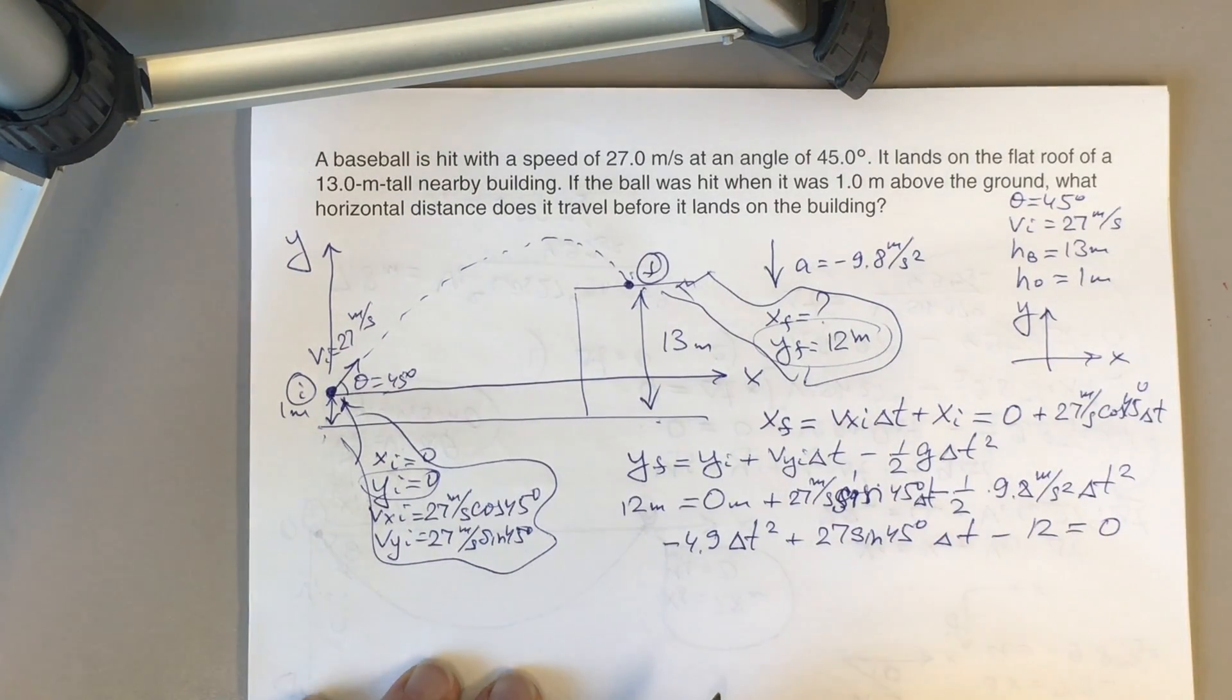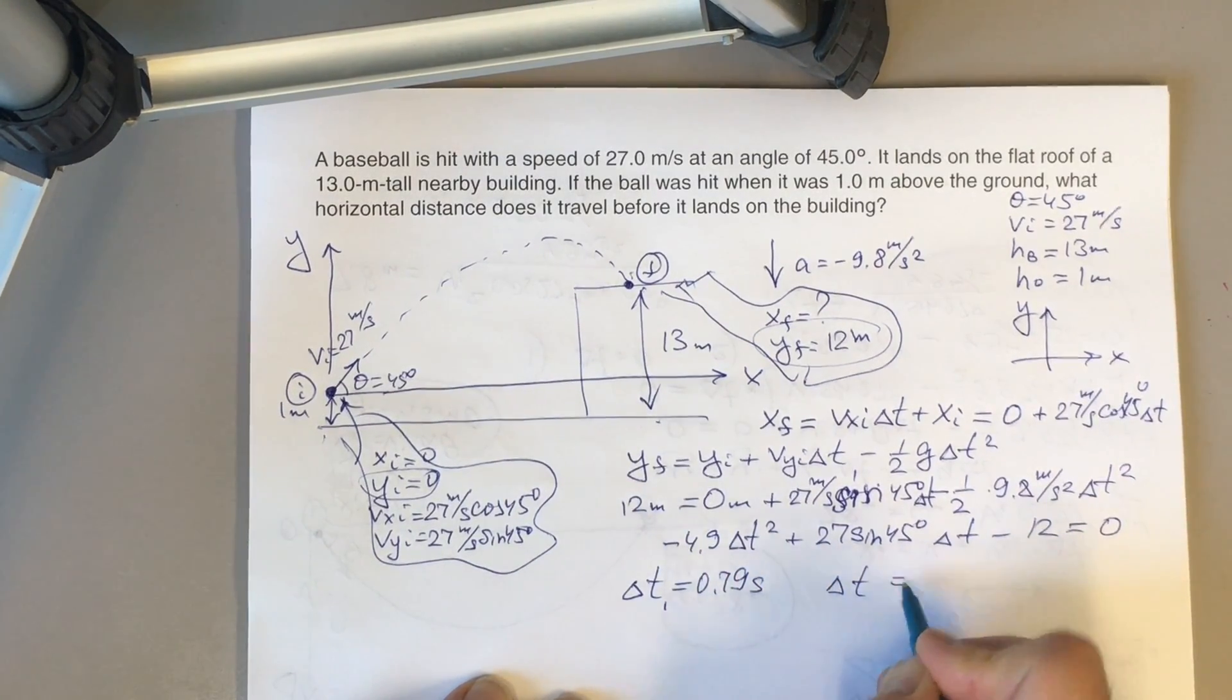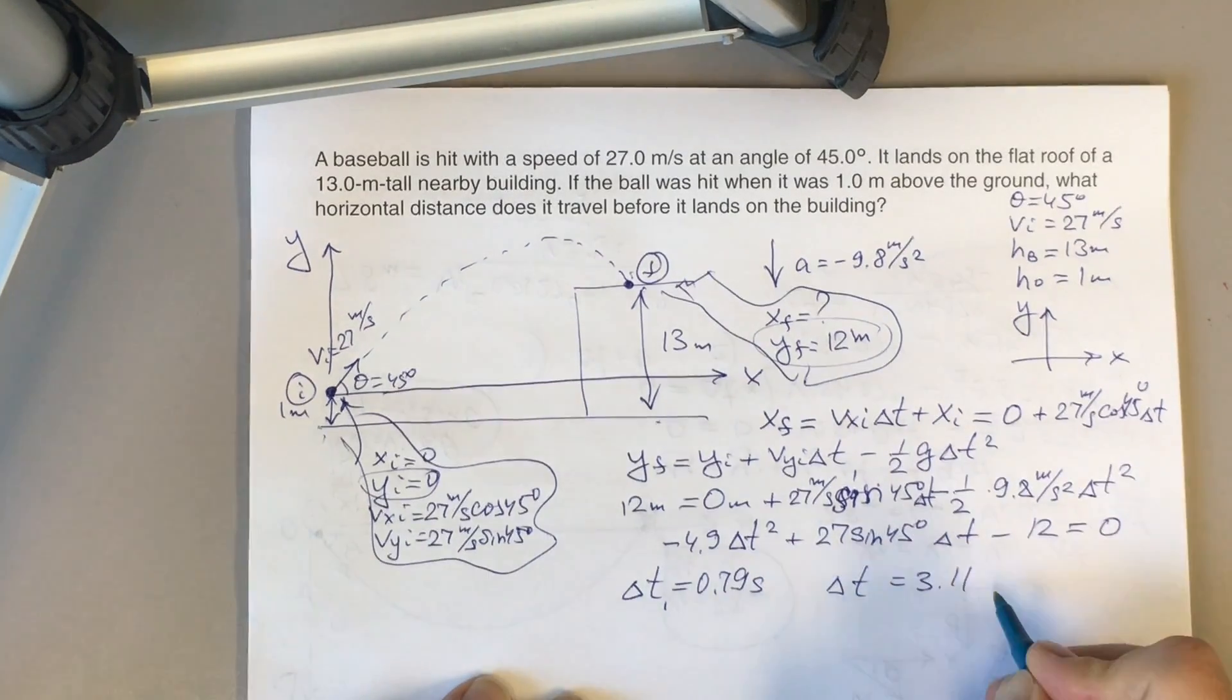This is a quadratic equation. If you solve this quadratic equation, you will have two solutions. One solution will give you delta t equals 0.79 seconds. Another will give you 3.11 seconds.